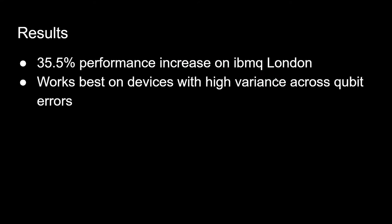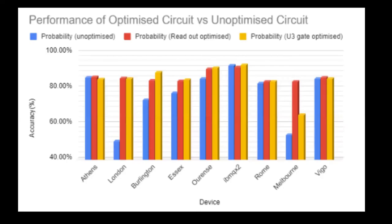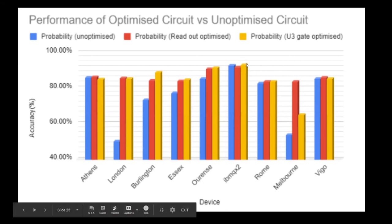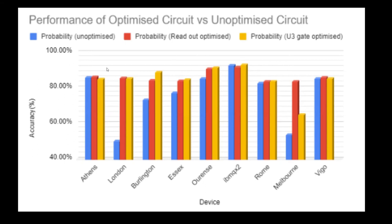This method works best on devices with high variance across qubit errors. The graph shows optimized versus unoptimized circuit performance — probability of U3 gate error. The yellow line represents our optimized method; the blue line represents the unoptimized baseline. On IBM Q London we obtain the highest results, around 90% optimization, compared to 50% for the unoptimized circuit — an increase of approximately 40 percentage points in device efficiency.